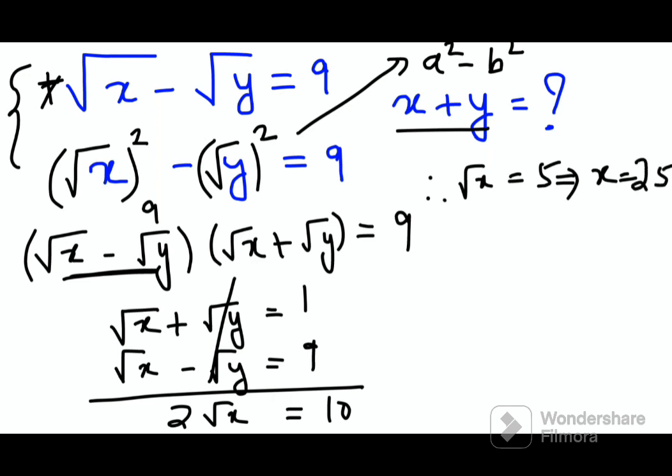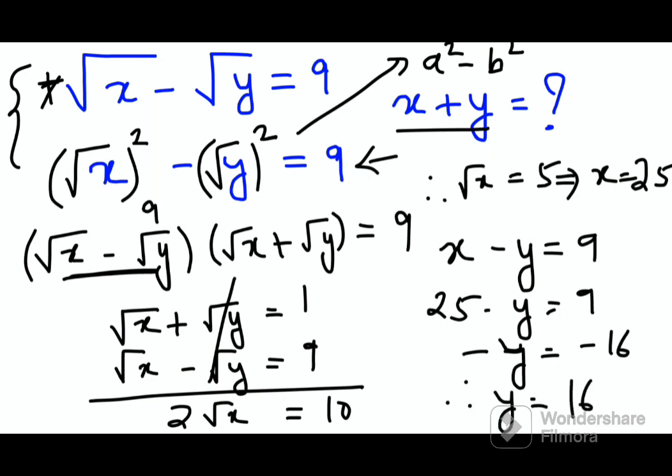Now I can put this in the original equation which was x minus y equals 9. So this is 25 minus y equals 9, so minus y equals minus 16 because I'm shifting the 25 on the other side. It becomes 9 minus 25. Therefore I can say y equals 16.